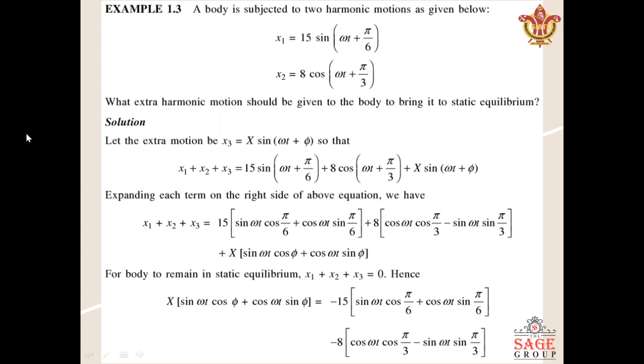Here is the given numerical: a body is subjected to two harmonic motions as given below. x₁ = 15 sin(ωt + π/6) and x₂ = 8 cos(ωt + π/3). These are the two simple harmonic motions. We have to find out what extra motion should be given to the body to bring it into static equilibrium position.